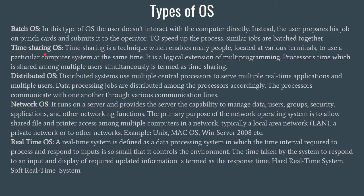The next type is Time Sharing OS. It enables many people located at various terminals to use a particular system at the same time. It is a logical extension of multiprogramming. Time sharing is essentially multitasking — the processor's time is divided into several slots, and those slots are provided to instructions to finish within that particular time slot. If any instruction remains incomplete in its time slot, the waiting instructions in the queue are executed first, and then the first instruction is again allocated some time.